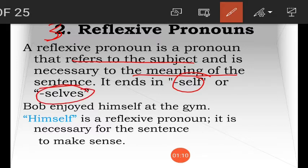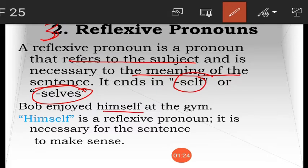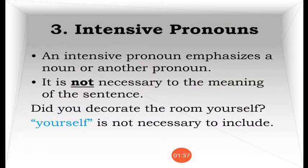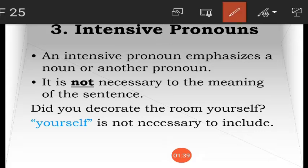Example: Bob enjoyed himself at the gym. So 'himself' is a reflexive pronoun — it reflects back to the subject. 'Himself' means Bob. It reflects back to the subject, so it is called a reflexive pronoun.